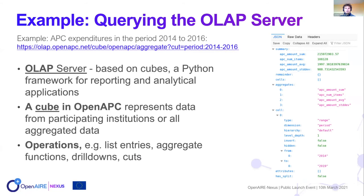The OLAP server is based on Cubes, a Python framework for reporting and analytical applications. In Open APC, each cube represents cost data from contributing institutions but can also represent all aggregated data for journals or publishers. The API offers several operations like listing entries by institution or by journal, and also aggregation functions — for example, a query to aggregate cost information for a time period from 2014 to 2016 returns a JSON file providing the cost information of APCs, the number of articles, the average sum, and the standard deviation.